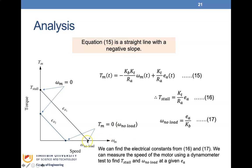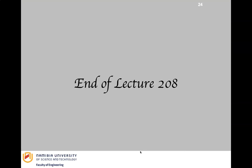We can find the electrical constants from equations sixteen and seventeen by measuring motor speed using a dynamometer test to find Tstall and ωno-load at a given Ea. Once we do that, we have our transfer function for the motor. Thank you very much for your attention.